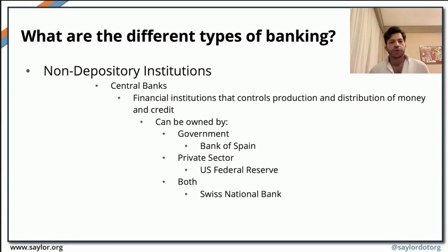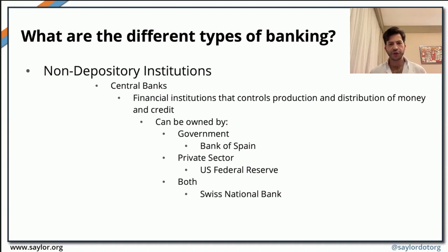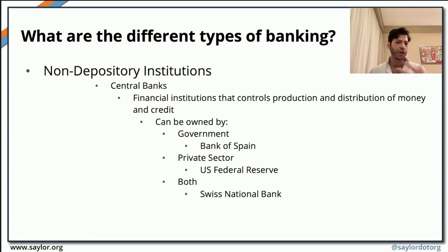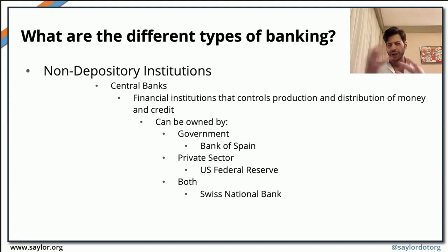Another category of non-depository institutions is central banks. Central banks are financial institutions that have the authority to issue currency — to issue it, distribute it, and at the same time control credit, interest rates, and inflation. These institutions could either be government-owned, owned by the private sector, or a combination of both. We've seen briefly what central banks are, and within the next few slides we will look further at what central banks actually do.